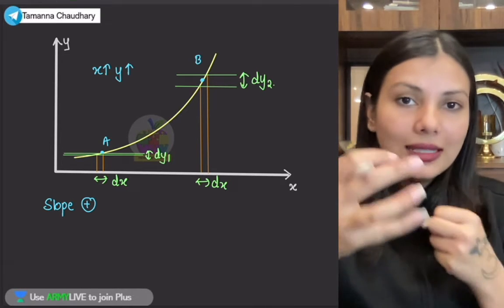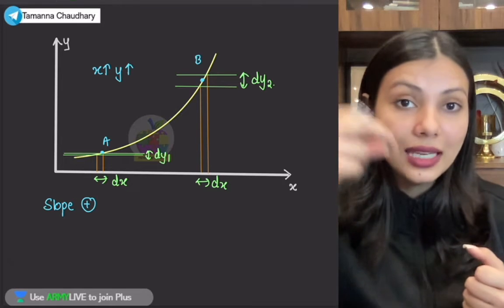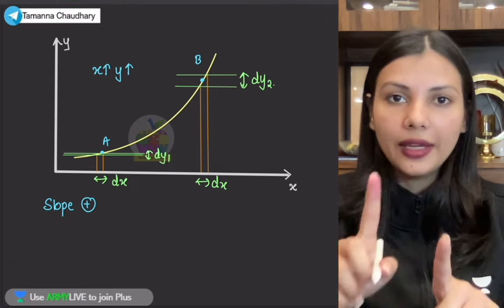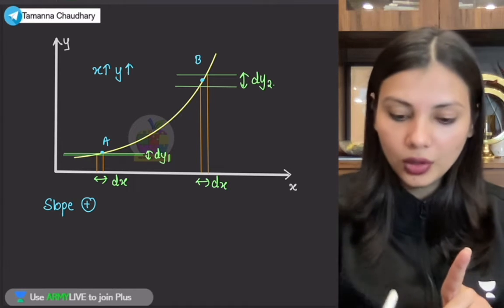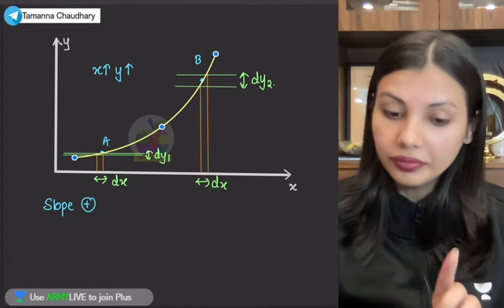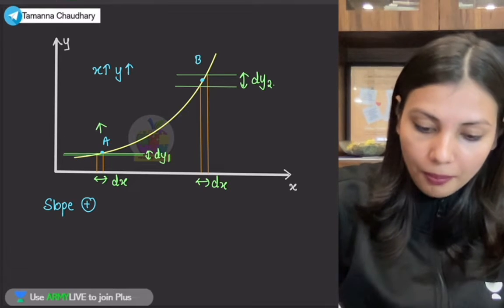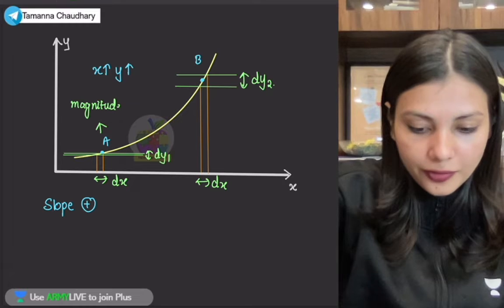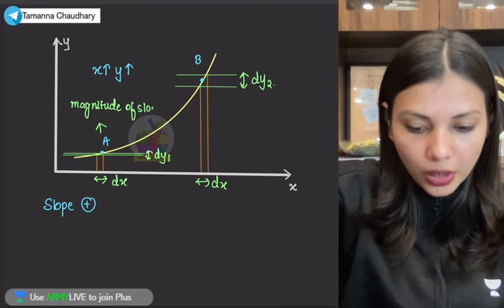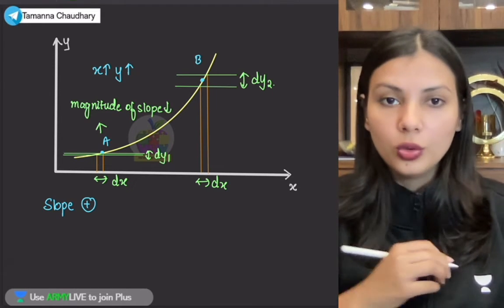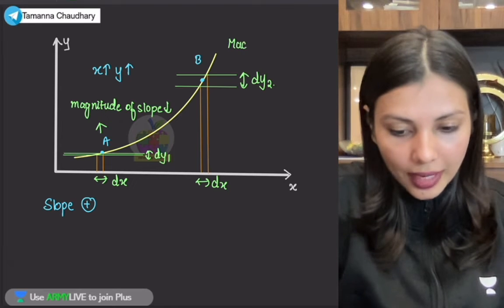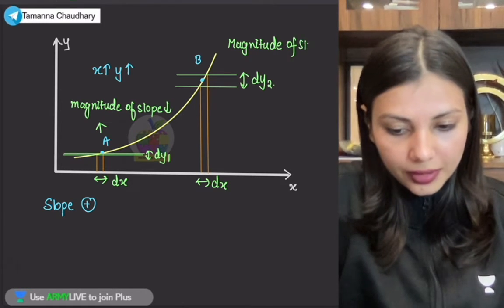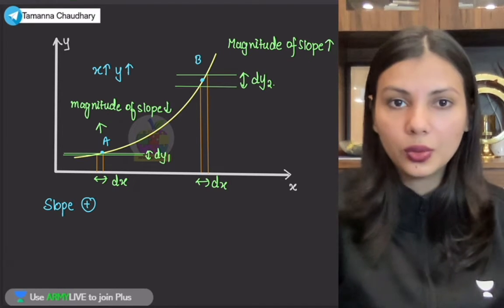Iska matlab, for the same unit change — or for the same change in the X quantity — the change in the Y quantity is greater at B and lower at A. So main kya bolungi? Yahaan par magnitude of the slope — tumhare paas jo magnitude of slope hoga woh chota hoga. Usi tariqe se, yahaan par main kya bolungi? Yahaan par main bolungi ki yahaan par jo magnitude of slope hoga — magnitude of the slope — woh zyaada hoga.